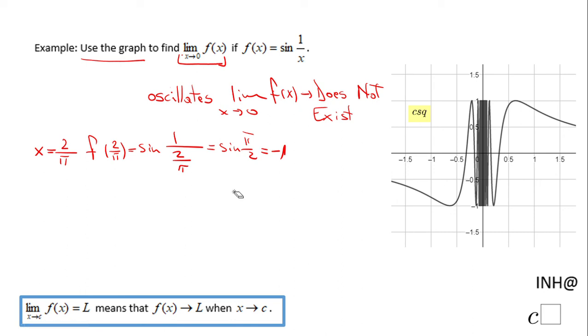Similarly, you can take another value that is a little bit closer to zero, like 2 over 3π. So you're going to end up with f(2/(3π)), using the same process. That will be negative 1.